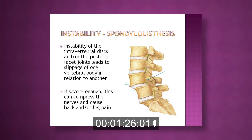Spondylolisthesis, or instability of the intervertebral discs and/or the posterior facet joints, leads to slippage of one vertebral body in relation to another. If severe enough, this can compress the nerves and cause back and/or leg pain.